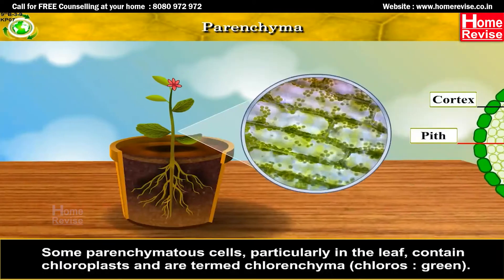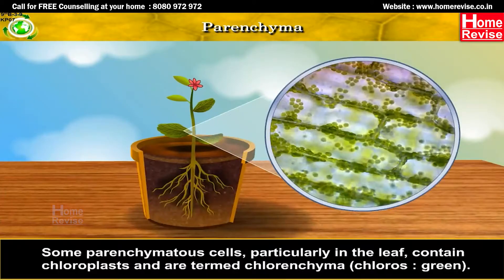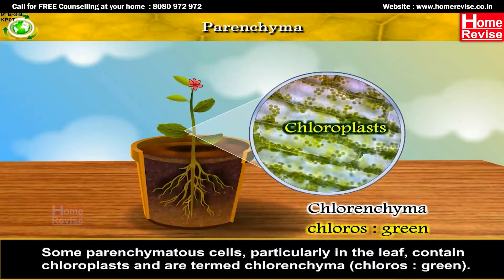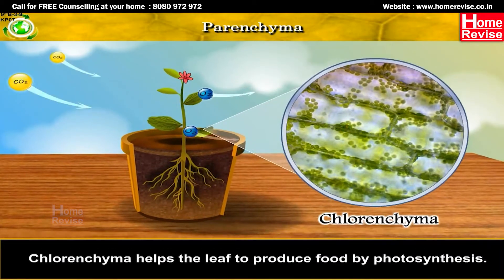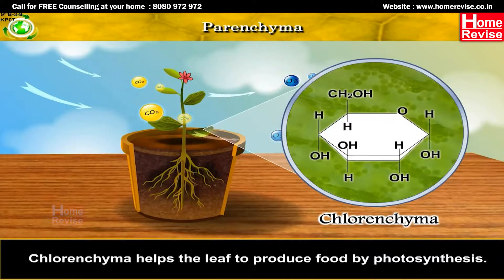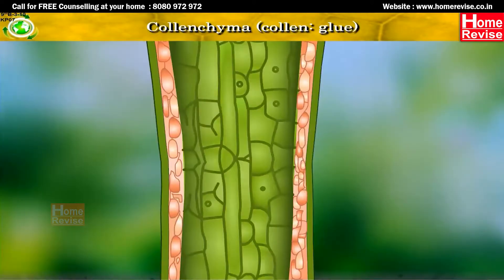Some parenchymatous cells, particularly in the leaf, contain chloroplasts and are termed chlorenchyma. 'Chloro' means green. Chlorenchyma helps the leaf to produce food by photosynthesis.